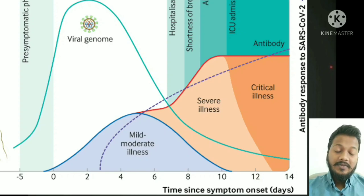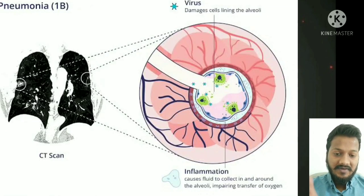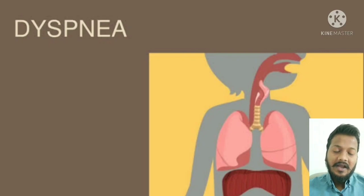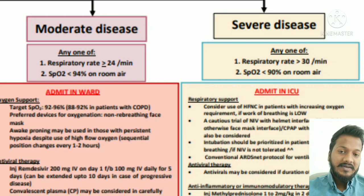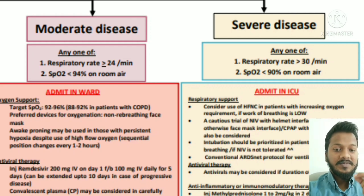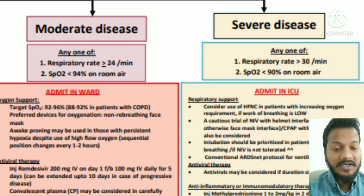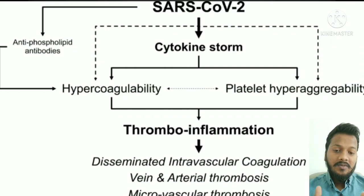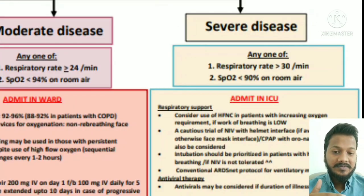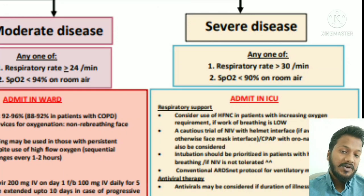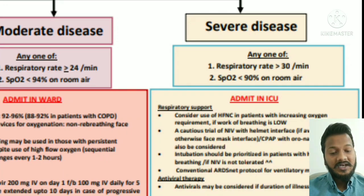In moderate stage, alveolar inflammation starts — the patient may experience dyspnea and maintains saturation between 93–99% on room air, with respiratory rate between 24–30 per minute. In severe stage, thrombo-inflammation starts, leading to complications like multi-organ failure; the patient may have saturation below 89% and respiratory rate beyond 30 per minute.